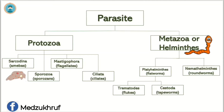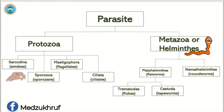Protozoa are further classified into: Sarcodina — amoebas, for example Entamoeba histolytica; Sporozoa — these include sporozoans, for example Plasmodium; Mastigophora — these include flagellates, for example Giardia lamblia; and Ciliata — these include ciliates, for example Balantidium coli. Metazoa are further classified into Platyhelminthes, also called flatworms, and Nematelminthes, also called roundworms. Platyhelminthes are further classified into trematodes and cestodes, while Nematelminthes are classified into intestinal and somatic nematodes.